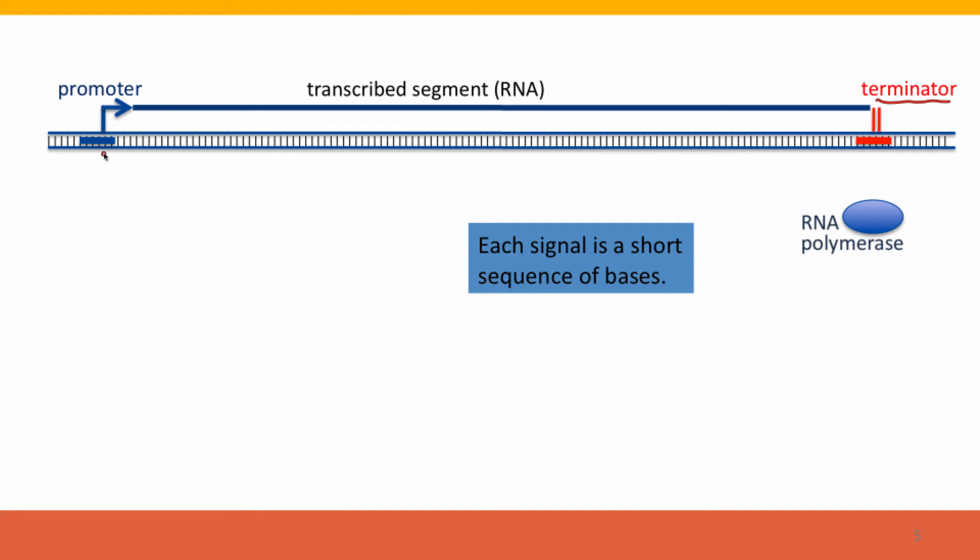So we have two signals, a start here signal and a stop here signal that are recognized by RNA polymerase.